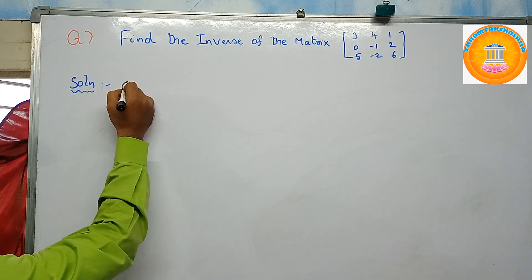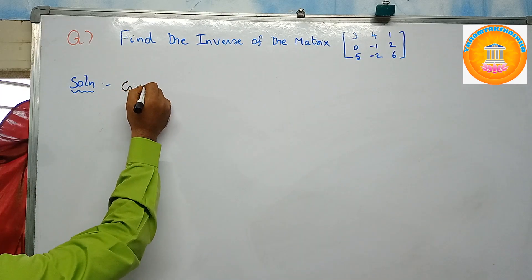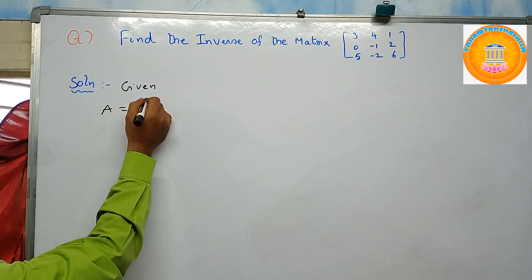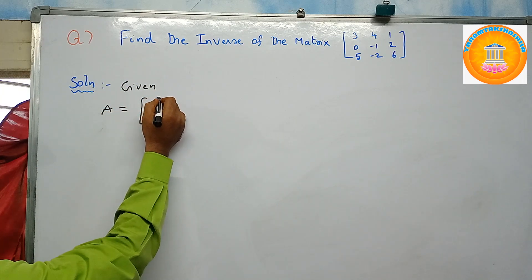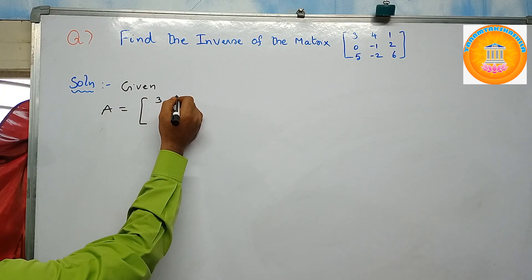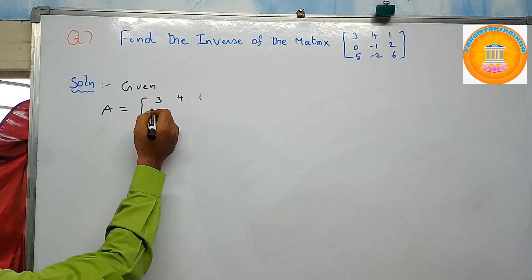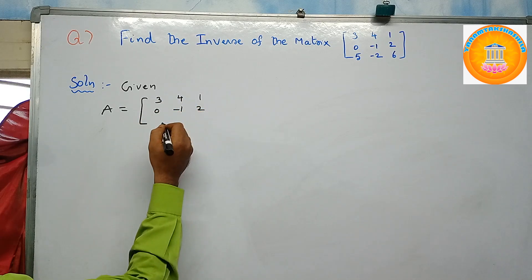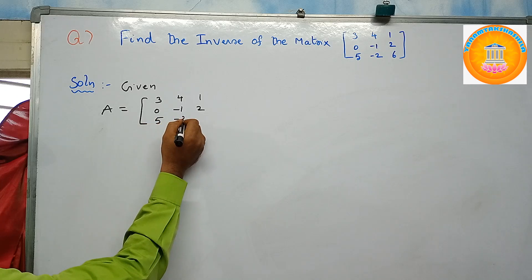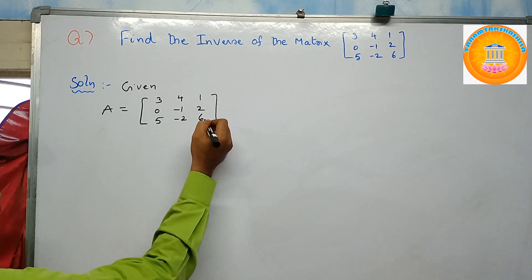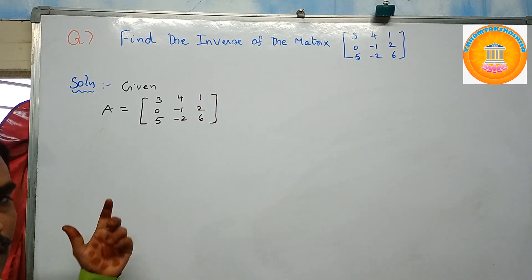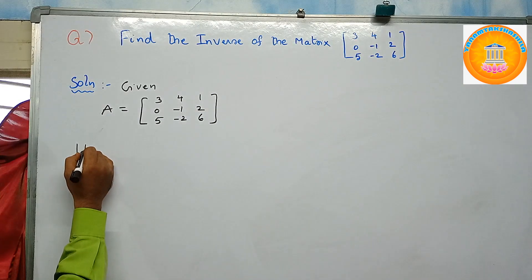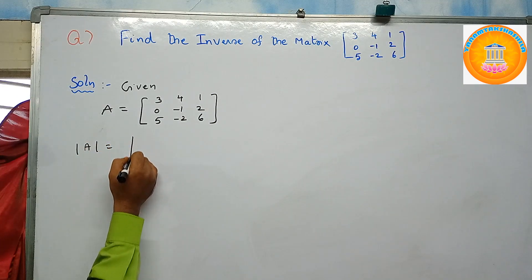So first, step one: write the given matrix. Denote this matrix with the letter A. So A equals the matrix with first row three, four, one; second row elements zero, minus one, two; third row elements five, minus two, six. Next, we'll find the determinant of A.